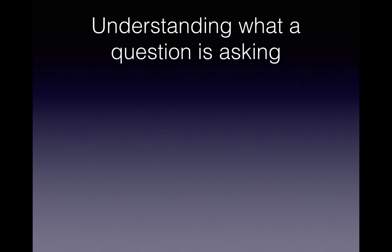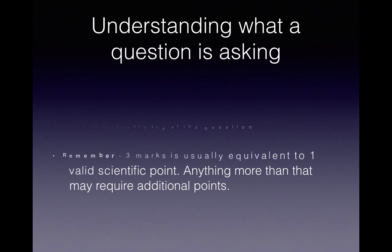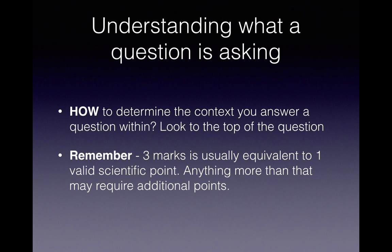Okay. The next one. Understanding what a question is asking. So I just have these specific points. I'll go through it very quickly and you can read these in more depth later on. So to determine the context you look at the top of the question and a new context is typically introduced by a definition. What I'd also like you to remember is usually three marks is equivalent to one valid scientific point that you may need to make in a test. So if there's 12 marks going for a particular question you need to answer four valid scientific points.